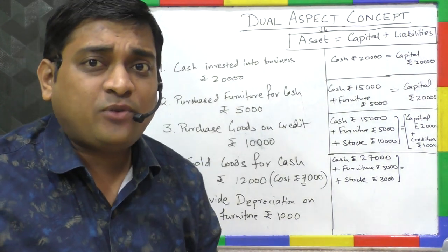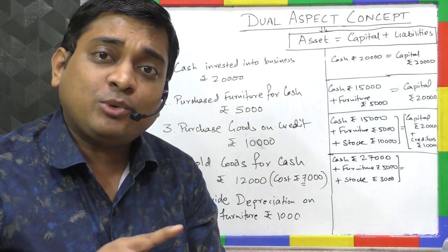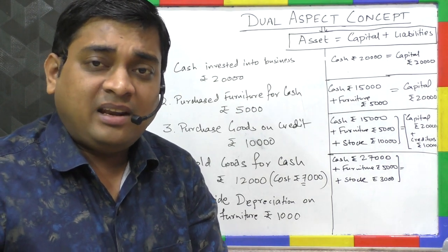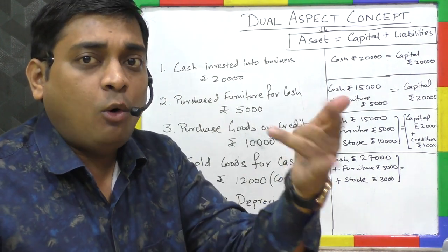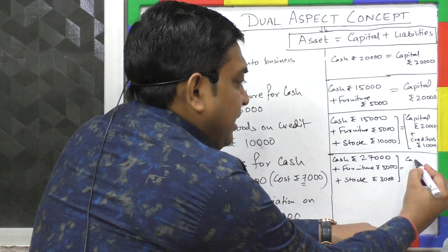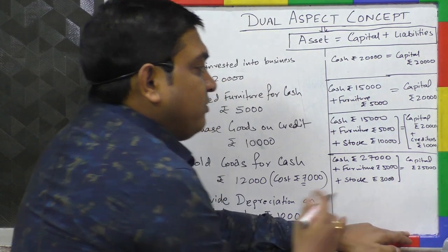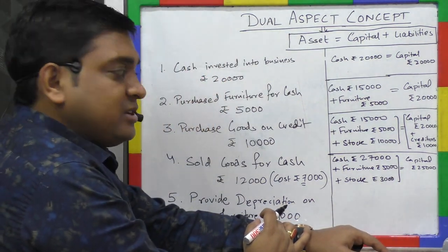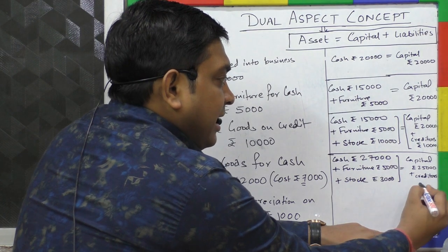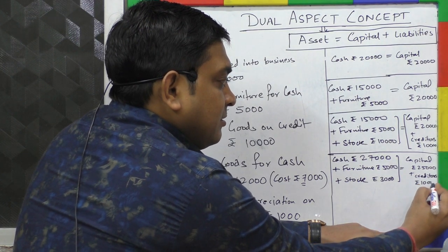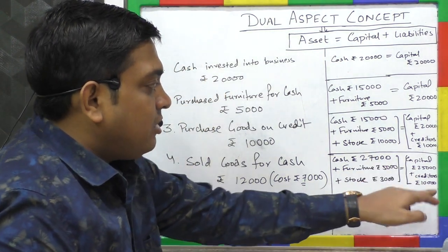The owner is eligible for this net profit. So capital will increase by ₹5,000, giving a new capital balance of ₹25,000. Creditors remain the same at ₹10,000. Total assets: 27 + 5 + 3 = ₹35,000. Total sources: 25 + 10 = ₹35,000. The equation holds.